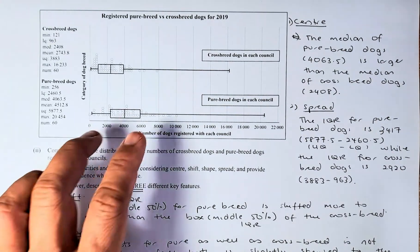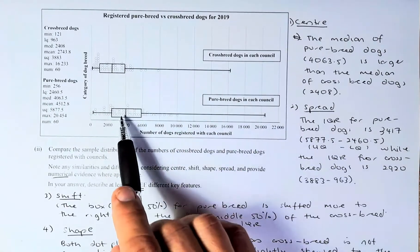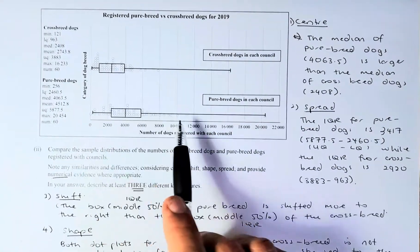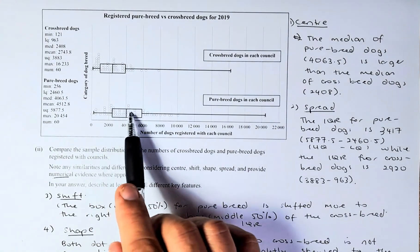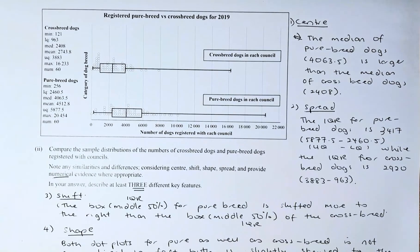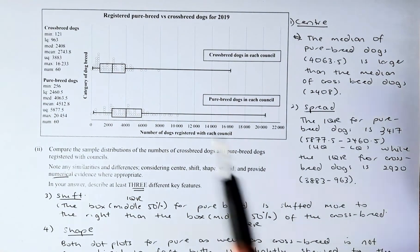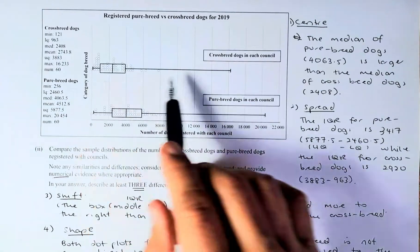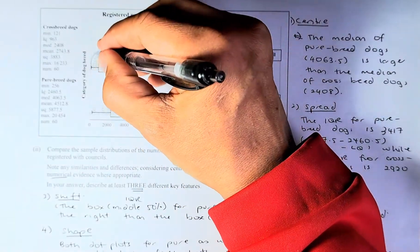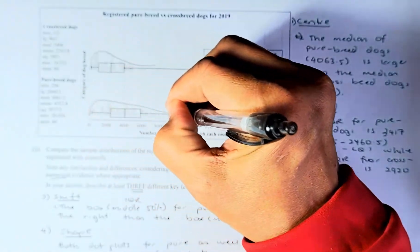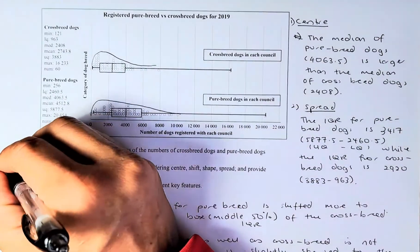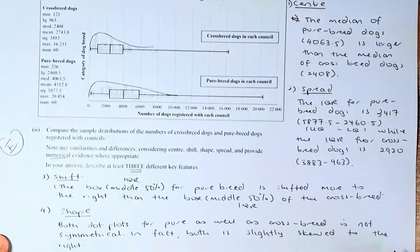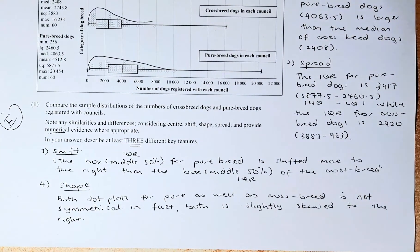Shift: look at the box, which represents the interquartile range. The box for purebred dogs is more shifted to the right, and we can argue that the number of registrations for purebred dogs is larger than for crossbred dogs. Shape: we look at the dot plot. The distribution is not symmetrical — it is skewed to the right. If you can answer three of the four features, you get excellence for this question.